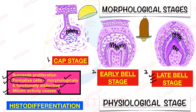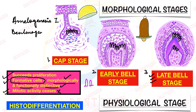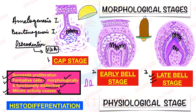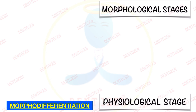If something goes wrong with histodifferentiation — if ameloblasts or odontoblasts are not properly formed — it can lead to amelogenesis imperfecta, where enamel is not properly formed, or dentinogenesis imperfecta, where dentine is not properly formed. In cases of vitamin A deficiency, odontoblast cells may not properly differentiate, leading to a type of dentine formation referred to as osteodentine — bone-like dentine. So disturbances in histodifferentiation can cause amelogenesis imperfecta, dentinogenesis imperfecta, and osteodentine in vitamin A deficiency.